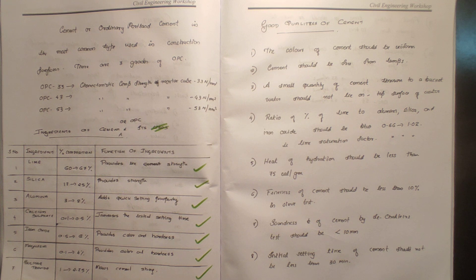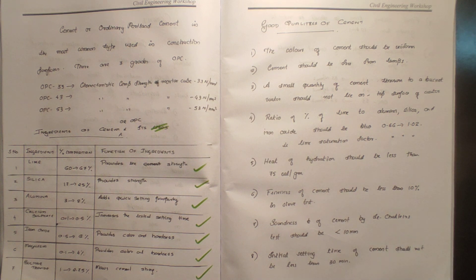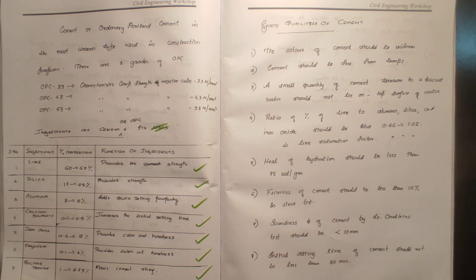Now we will discuss the good qualities of cement. The color of the cement should be uniform. One bag of cement should be free from lumps. The cement should be free from lumps, as it is a chemical material that reacts through the hydration process.